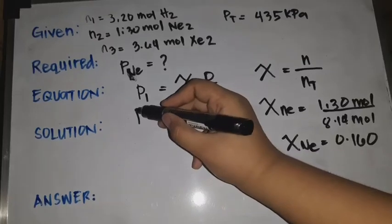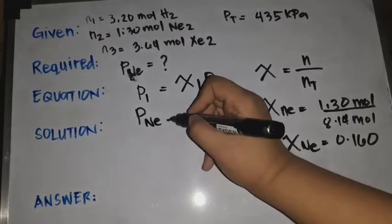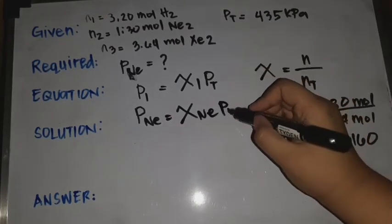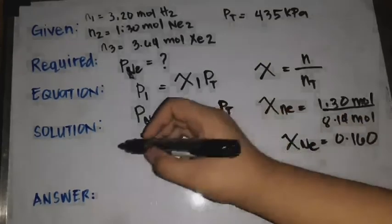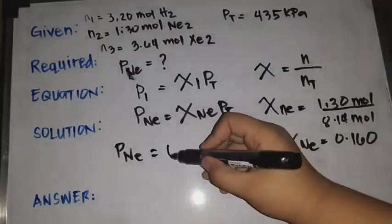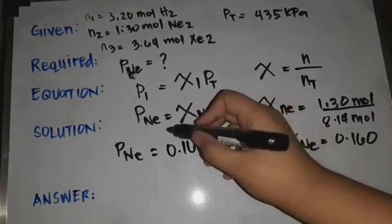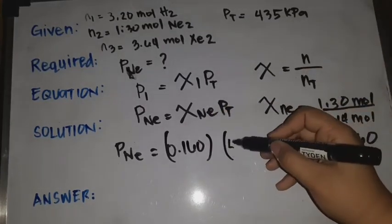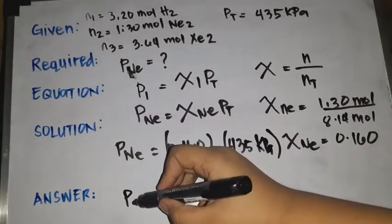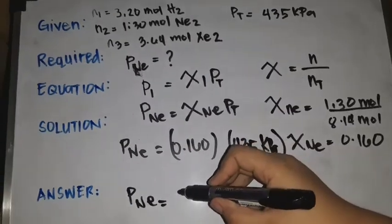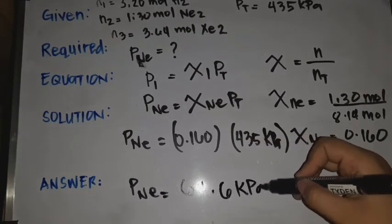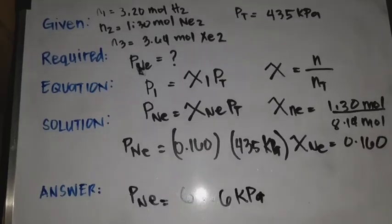Therefore, the partial pressure of Ne = chi(Ne) × P_total = 0.160 × 435 kilopascal = 69.6 kilopascal. That is the answer for the last problem.